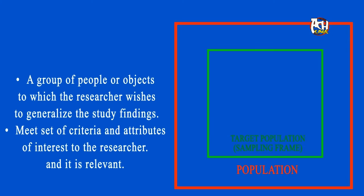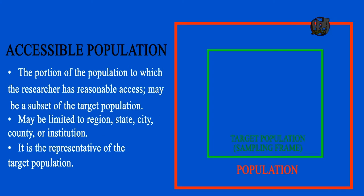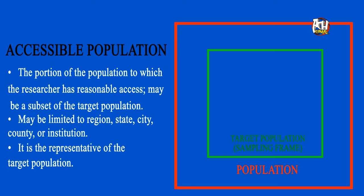Accessible population is a group of people from within a target population that the researcher has direct access and contact with. It is illustrated in a black square.